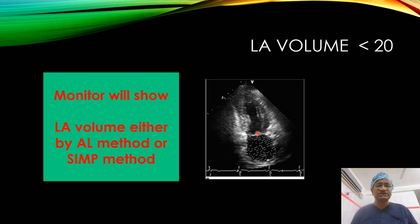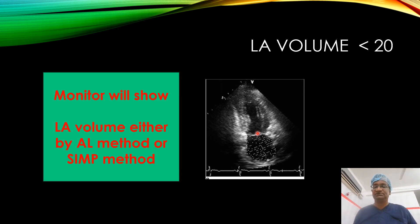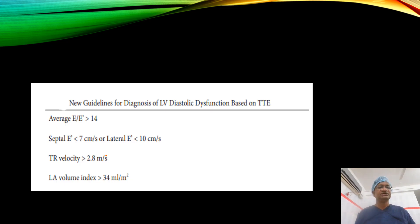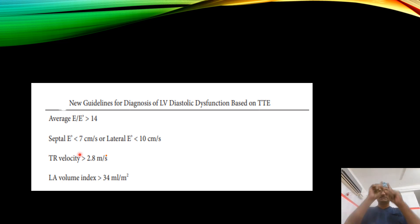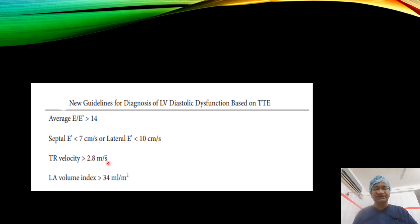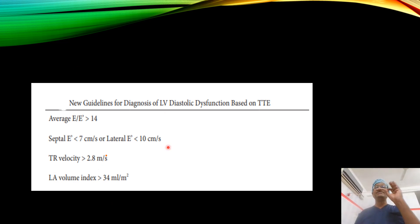The LA volume index normally is less than 20 mL per meter squared of body surface area, measured by area-length method. E/e' ratio more than 14 indicates elevated filling pressures. Septal e' less than 7 cm/s and lateral e' less than 10 cm/s indicate diastolic dysfunction. Tricuspid regurgitation velocity normally below 2.6 m/s - if more than 2.8 m/s it is abnormal. LA volume index more than 34 mL/m² points to severe diastolic dysfunction.